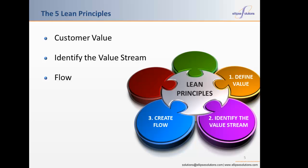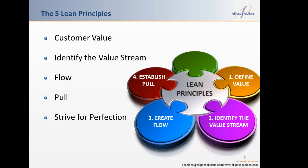With flow, the waiting time between processes is eliminated, adding value more quickly. Next is establish pull — making only what is needed by the customer. With a pull concept, nothing is produced until the customer signals a need. And fifth is striving for perfection. Lean is a journey of continuous improvement and the goal is to economically produce exactly what the customer wants, exactly when the customer wants it. Perfection is an aspiration — anything and everything is able to be improved.